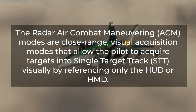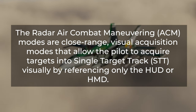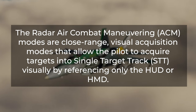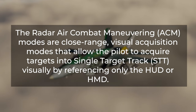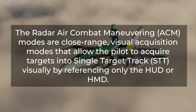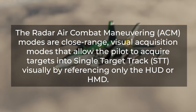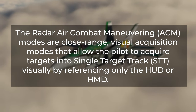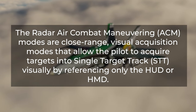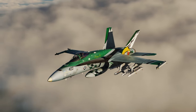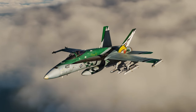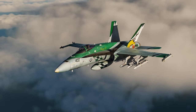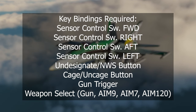The radar air combat maneuvering or ACM modes are close-range visual acquisition modes that allow the pilot to acquire targets into single target track or STT lock, visually by referencing only the HUD or the HMD. The ACM modes are only available in the AA or air-to-air mode. Before we get any further, let's take a look at the key bindings.